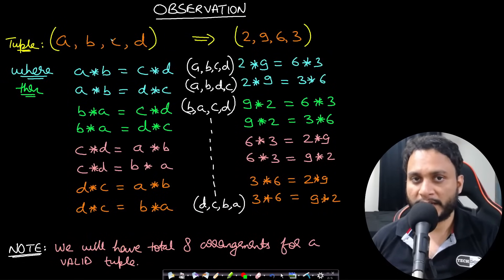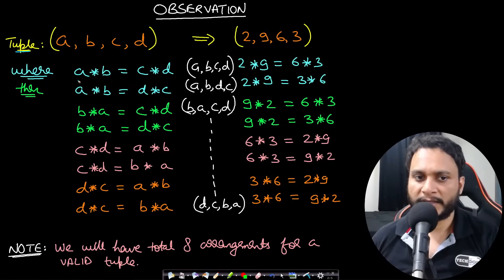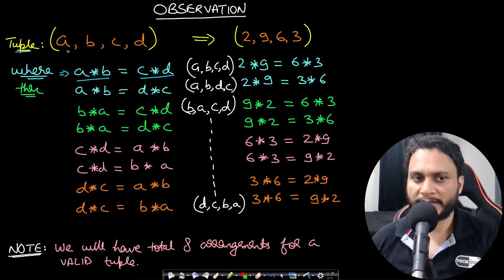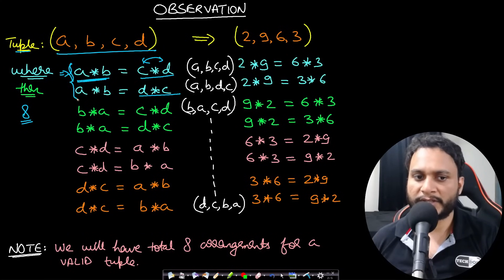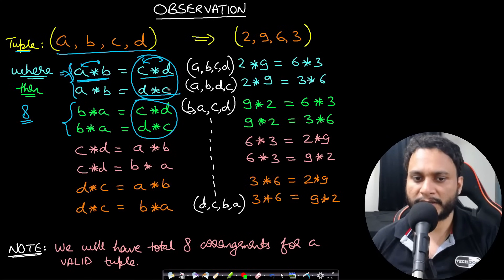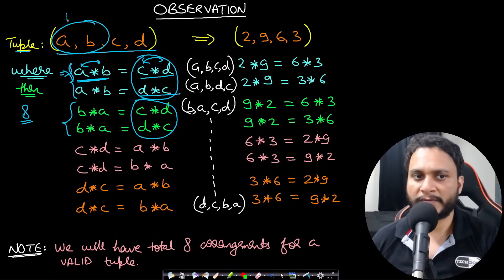Now let's look at an observation that will help us solve the problem. If you consider the tuple a, b, c, d to be valid such that a multiplied by b equals c multiplied by d, then you can rearrange this tuple in 8 different valid ways. You can keep a and b on the left side and rearrange c and d as d and c — that gives two arrangements. Then you can shuffle a and b to get b and a while reusing the same right-hand side — giving four arrangements total from keeping a, b on the LHS.